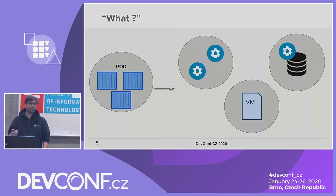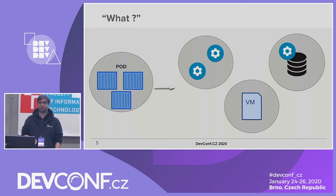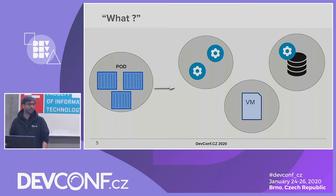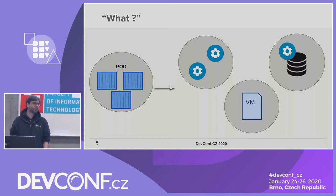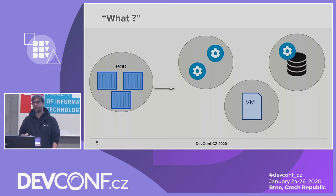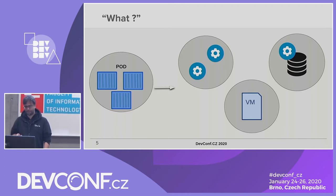We'll start with what is being drained from the node. We have our pods containing our containers, which are running applications, microservices, and processes. Some profound examples for our world are virtual machines running on pods, as we do in Qbert, storage pods like in OCS. These are the heavy workloads.